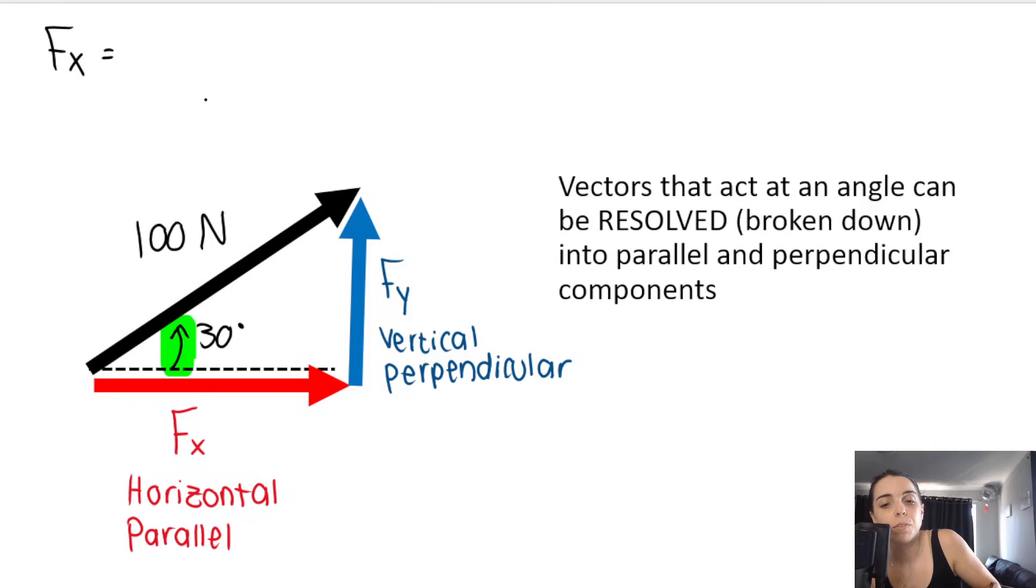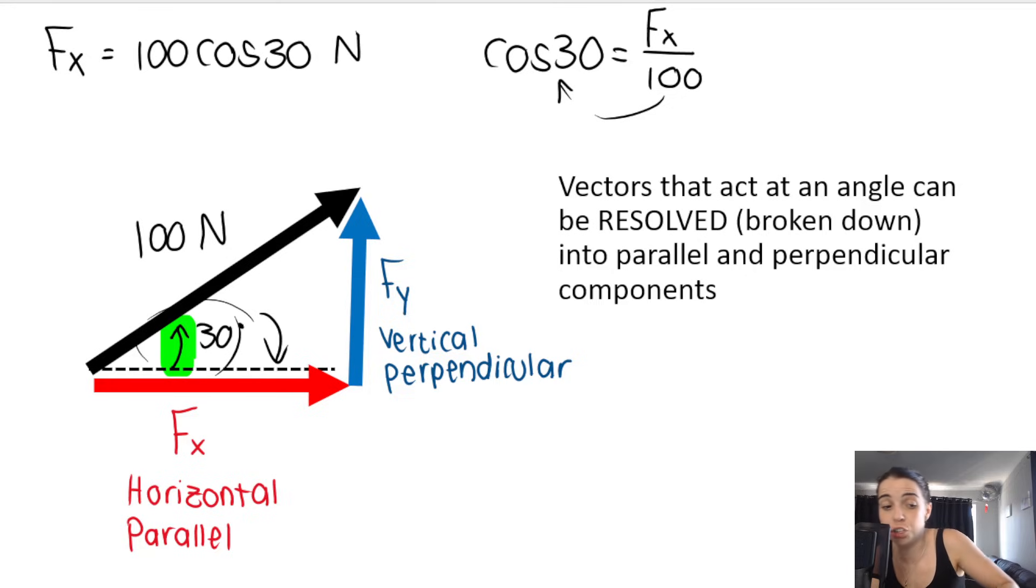Cos. So they'll say, cos θ is equal to adjacent. What is next to the angle? fx. The hypotenuse is 100. Take the 100 over. So fx equals 100 cos 30 Newtons, which you can work out. You get 86.60 Newtons to the right because you see it's pointing to the right. So when I worked out the x component, I used cos in this case.